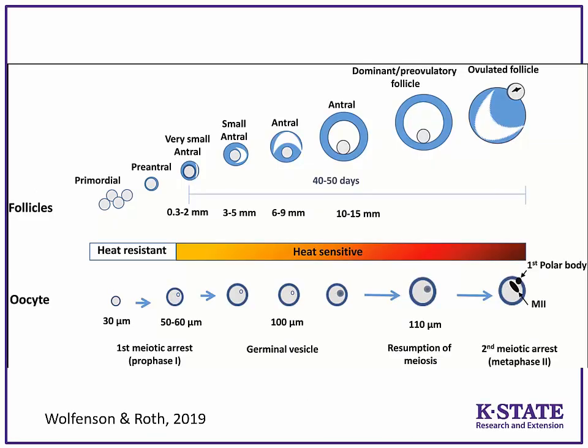Looking at follicular growth and heat stress — as the follicle gets closer to ovulatory size, it is much more sensitive to heat stress, which supports the previous slide's findings. Very small follicles within the ovary that are waiting their turn do not appear to be impacted by heat stress. This is important because it means when we come out of heat stress, we can return to normal fertility — we haven't damaged those primordial cells.